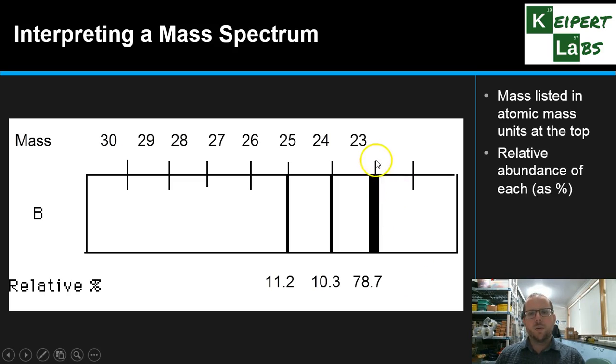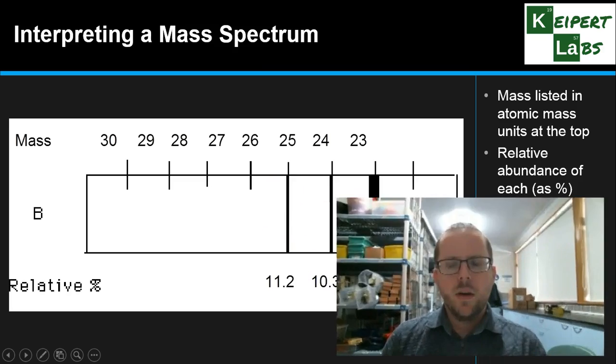And so then we can say, what's the mass of your average magnesium atom going to be? Or if you've got a thousand magnesium atoms or a million magnesium atoms, what's their average mass going to be? So we can say, well, it's 78.7% of this and so on. And combine those together to get an average mass of around about 24.3.